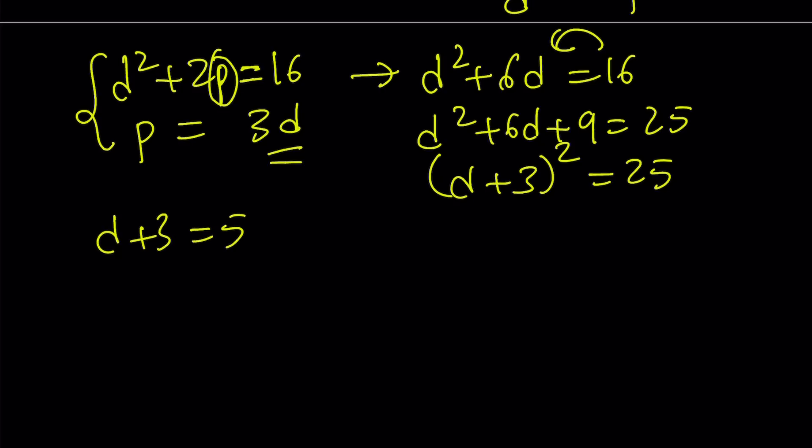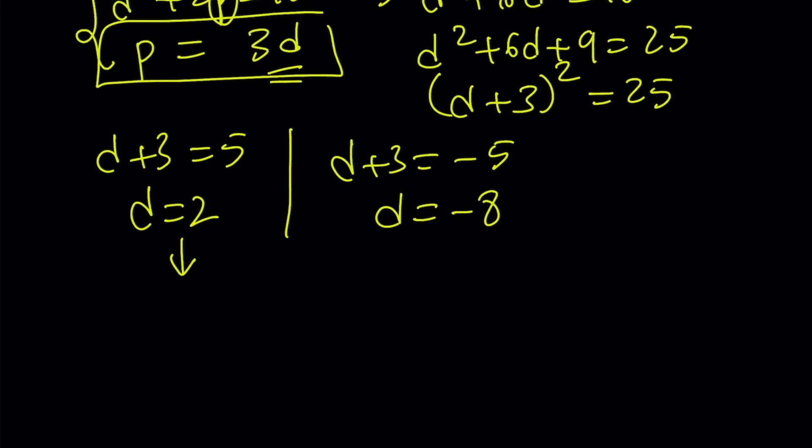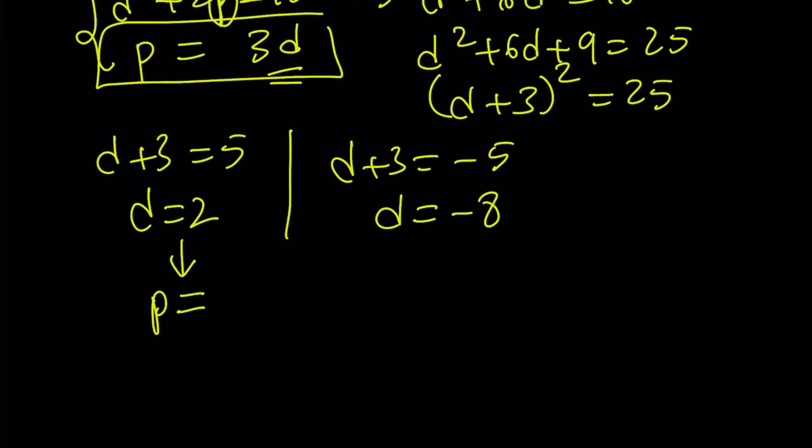So from here, d plus 3 is 5, which means d could be 2. Or d plus 3 is negative 5, which means d equals negative 8. And of course, we can use the identity p equals 3d and just multiply the d by 3 to get the p value. p is 6 here.